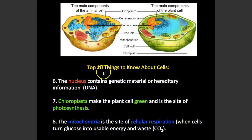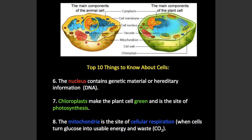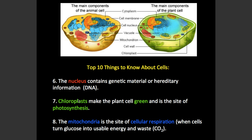This is super important to know, so I'm making it its own point. The nucleus contains the DNA, genetic material, or hereditary information — those are all three words for the same thing. Chloroplasts are what make the plant cell green and are the site of photosynthesis, where the plant makes its own food. The mitochondria is the site of cellular respiration — it's when cells turn glucose into usable energy and waste as carbon dioxide.